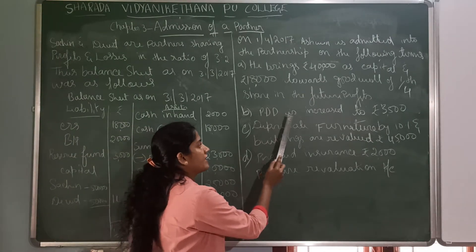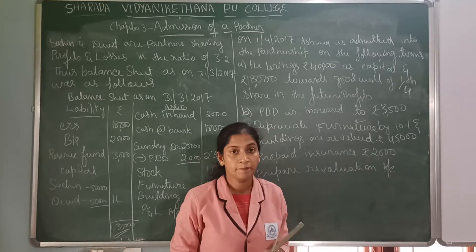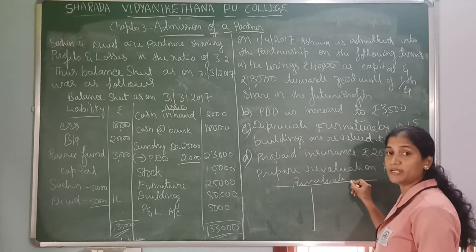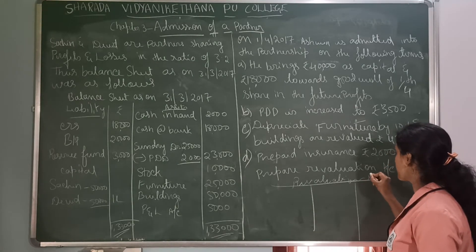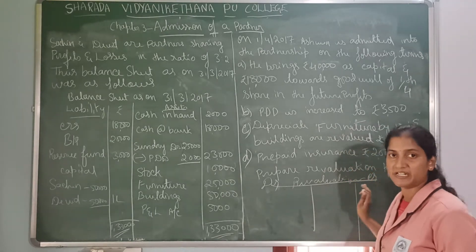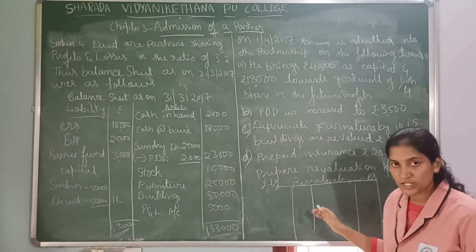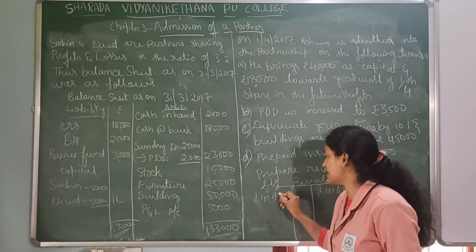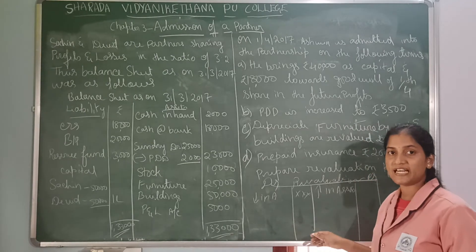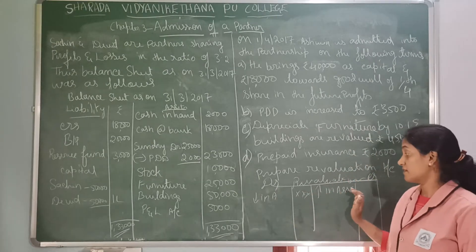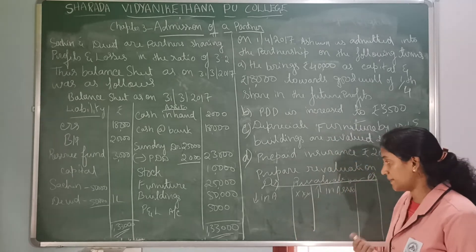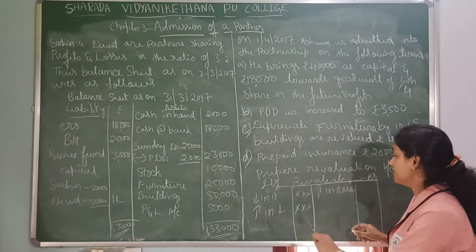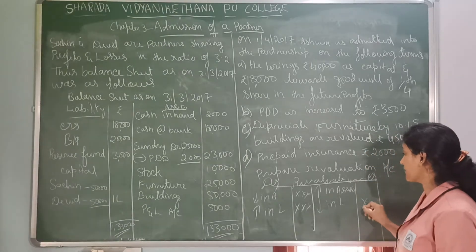Next, PDD is increased to Rs. 3,500. In the revaluation format, we have a debit side and a credit side. The rules of revaluation are: increases in assets are credited; decreases in assets are debited; increases in liabilities are debited; decreases in liabilities are credited.